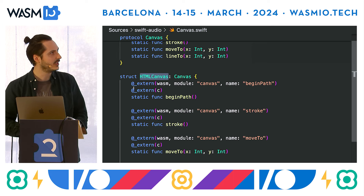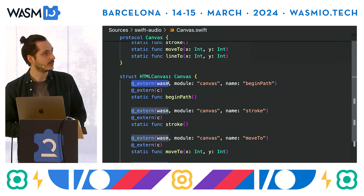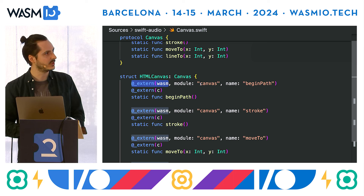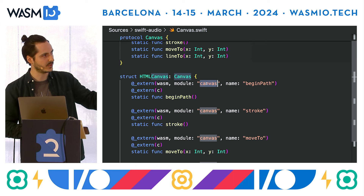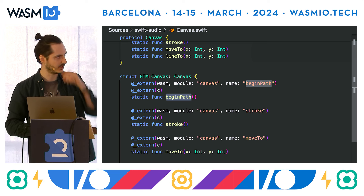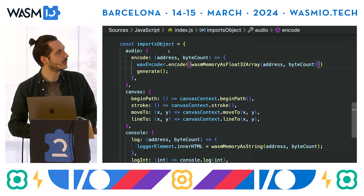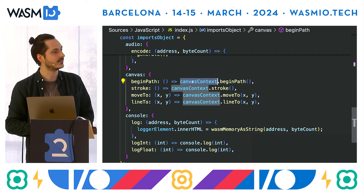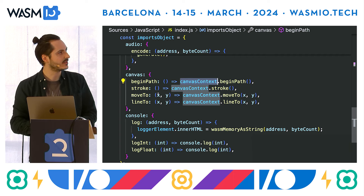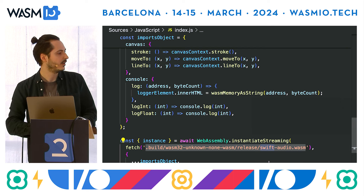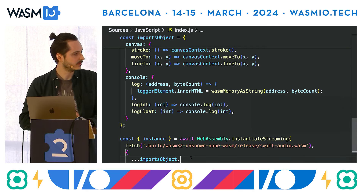On the JavaScript side, there's an imports object declared, and here's the canvas module, which basically proxies to the canvas context declared in the same file. Whatever arguments are passed, we pass them verbatim to the corresponding methods. Below, we just instantiate the WebAssembly module produced by the Swift compiler and pass this imports object to link the functions for JS interop to work.